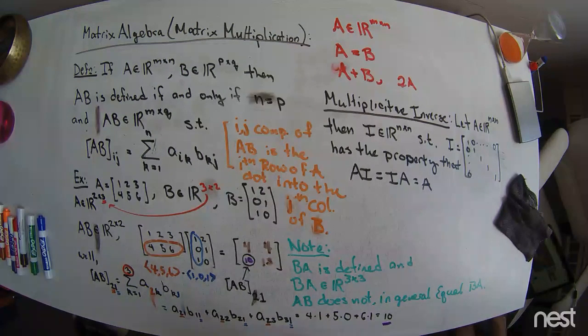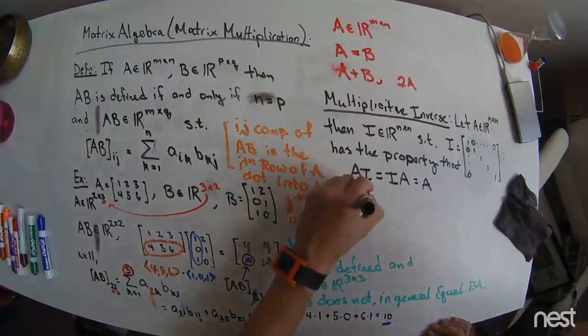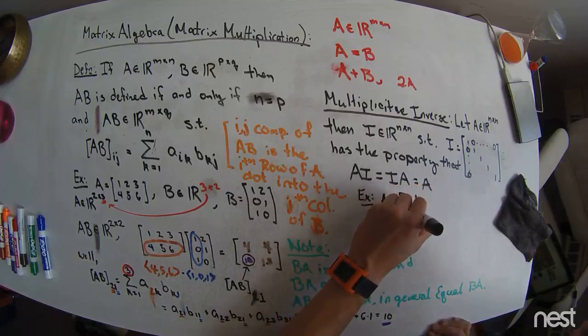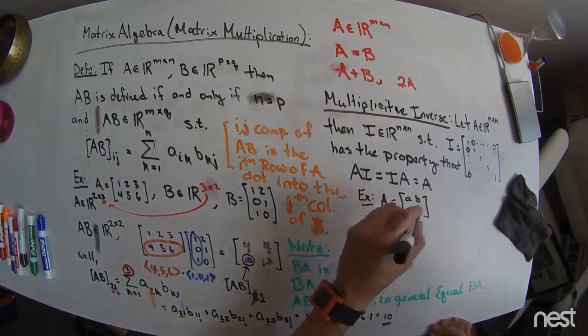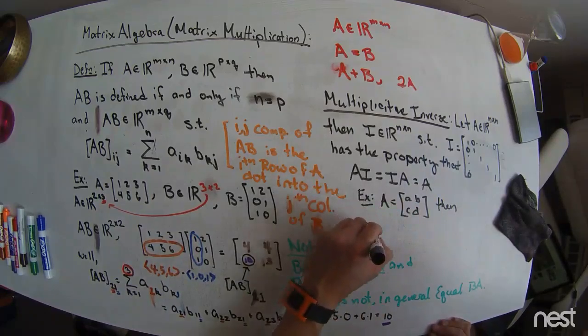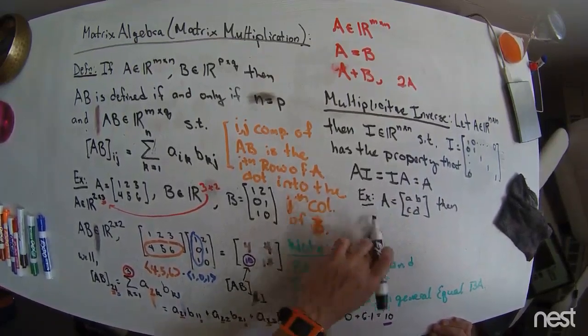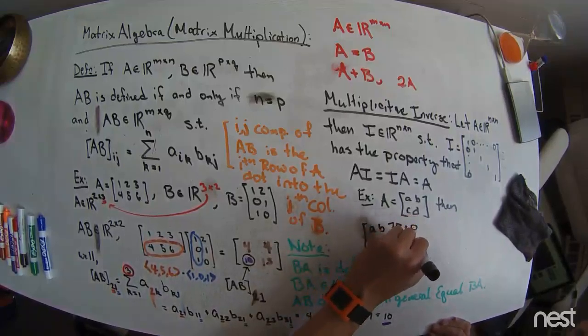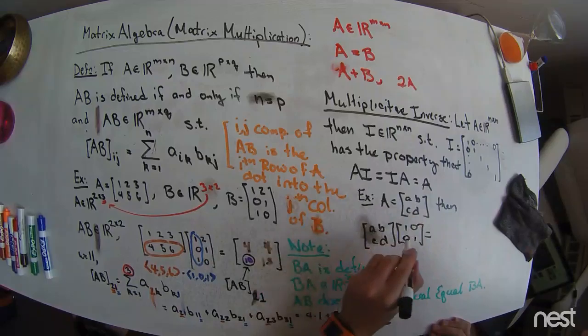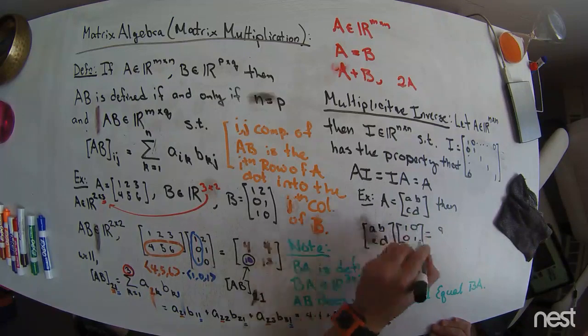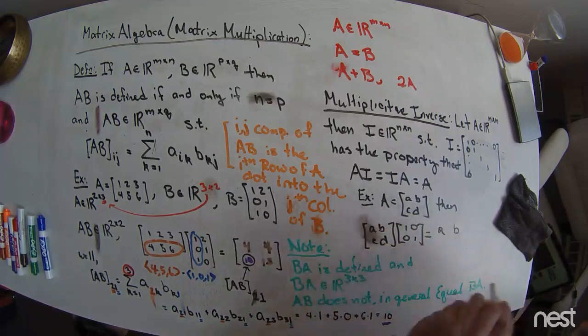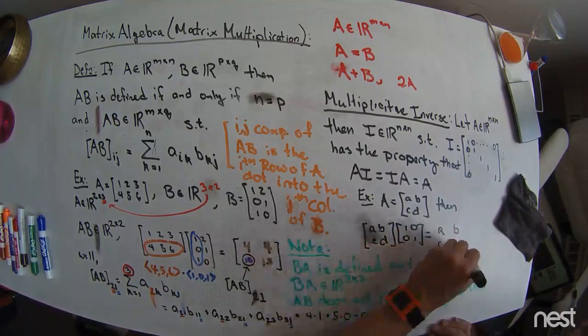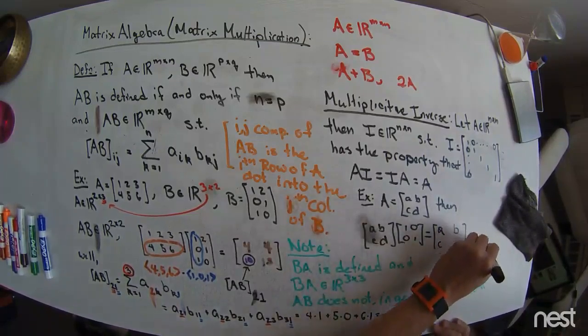And so let's do a quick example. Let's say, since we know we're going to work with 2 by 2's, let's say A is equal to A, B, C, and D. Then A, B, C, D times this identity matrix is equal to A times 1 plus B times 0, so that's A. A times 0 plus B times 1, so that's B. C times 1 plus D times 0, that's C. C times 0 plus D times 1, and that's D, which is the original A matrix.